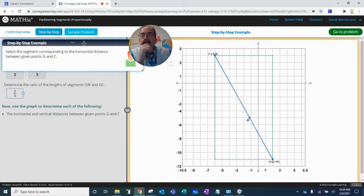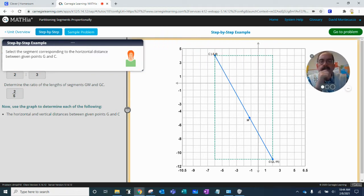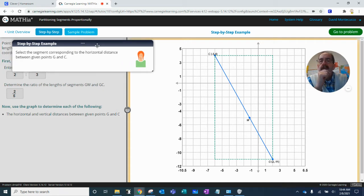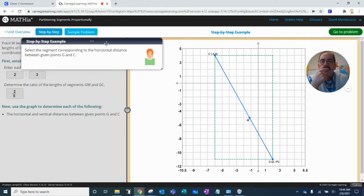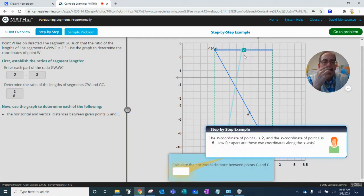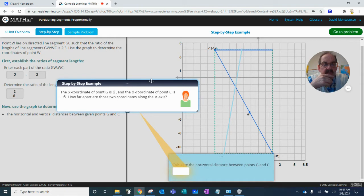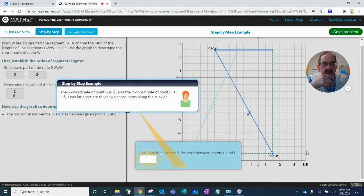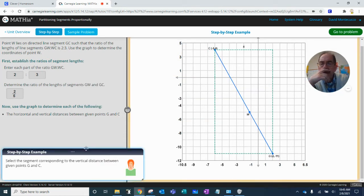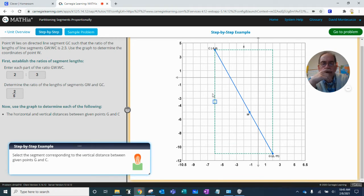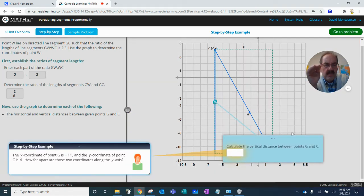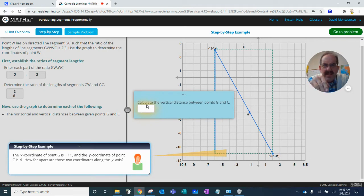Now use the number. Select the segment corresponding to the horizontal distance G to C. G to C, from two to six, there's eight units. Either of them, select the segment to the horizontal. So four, negative 11, 15.